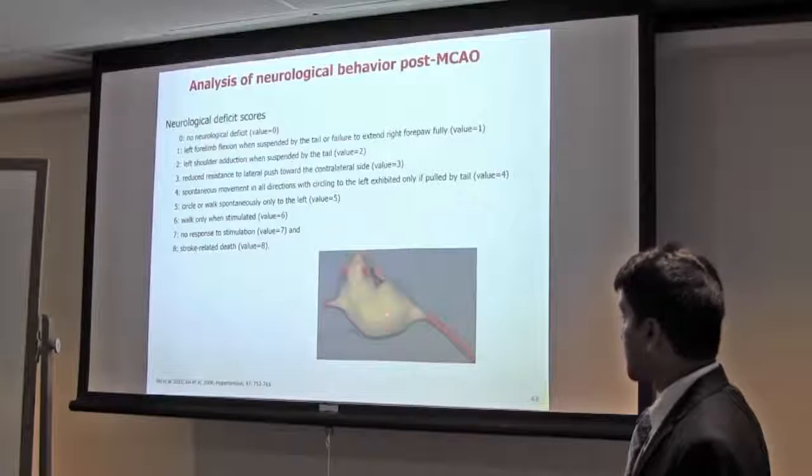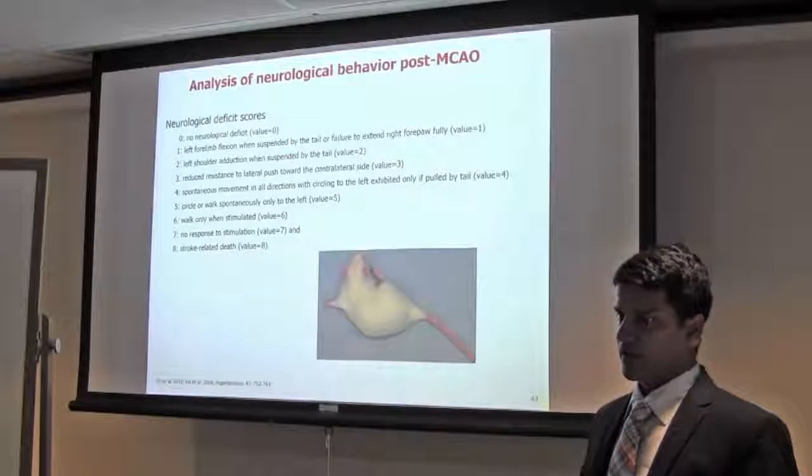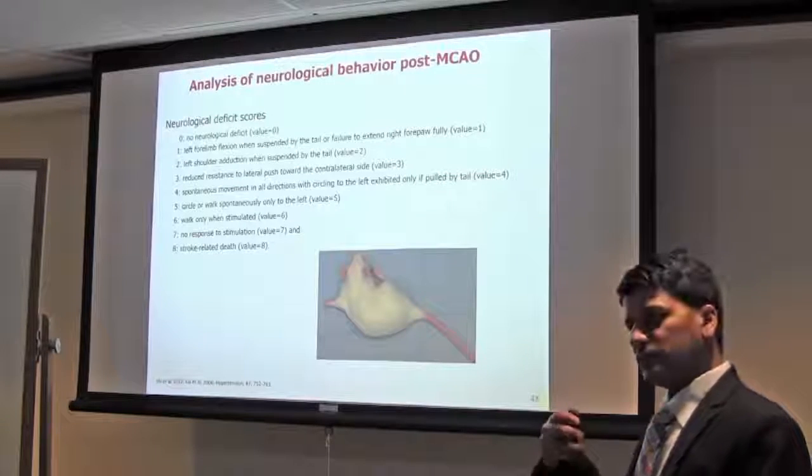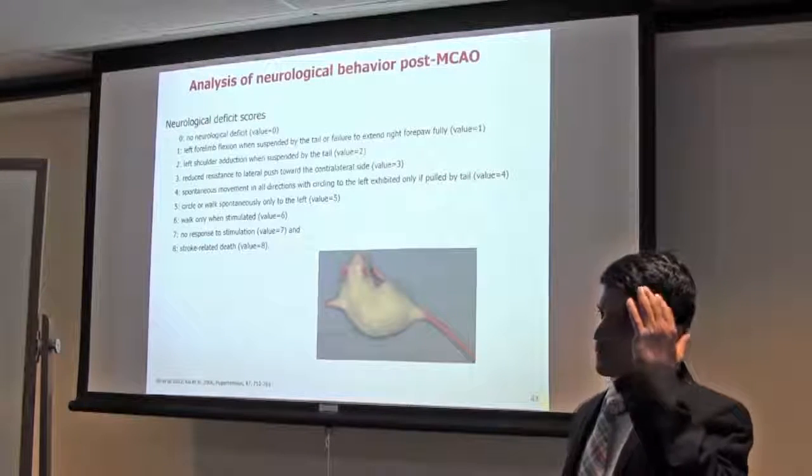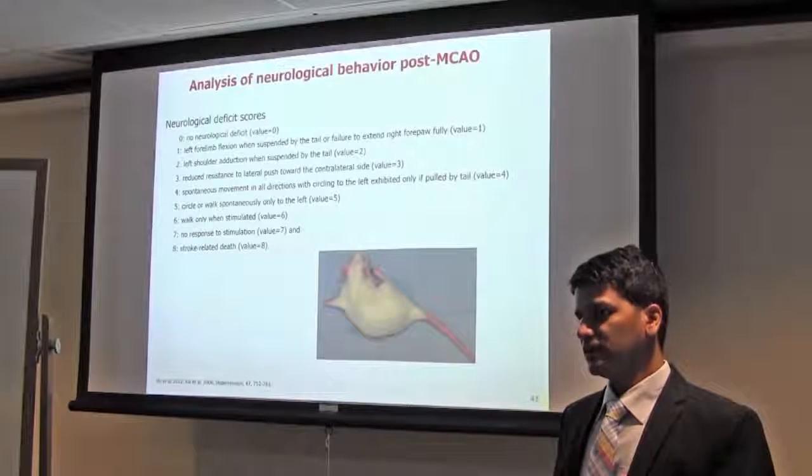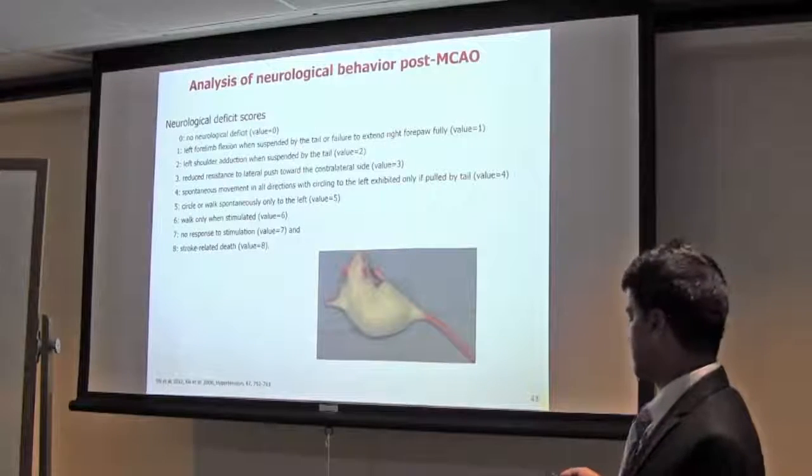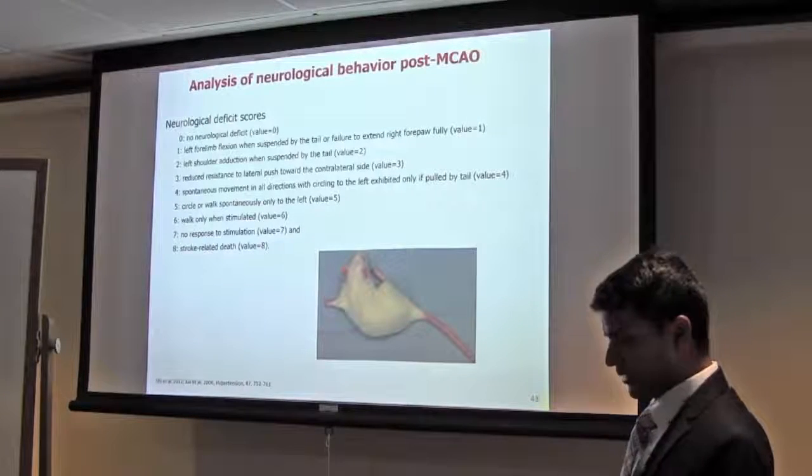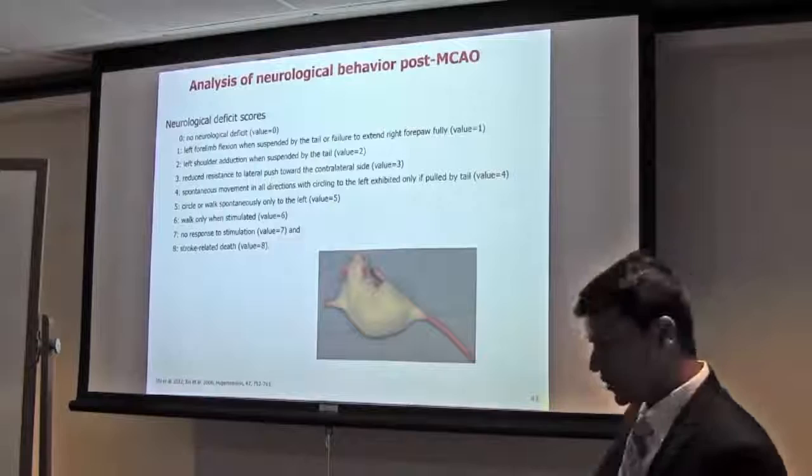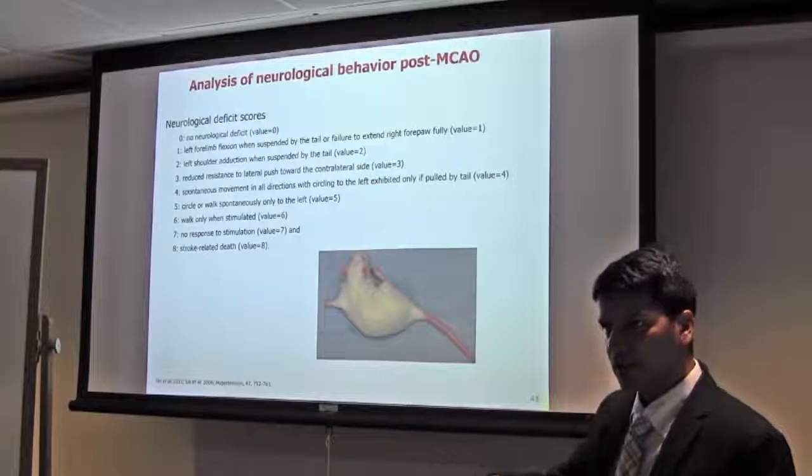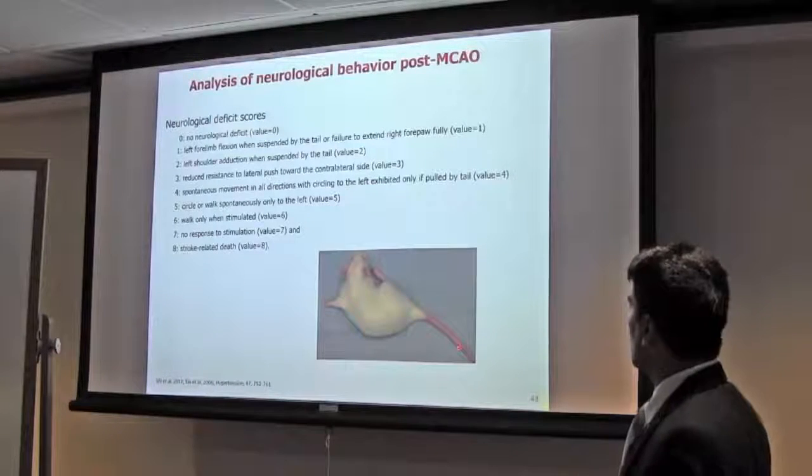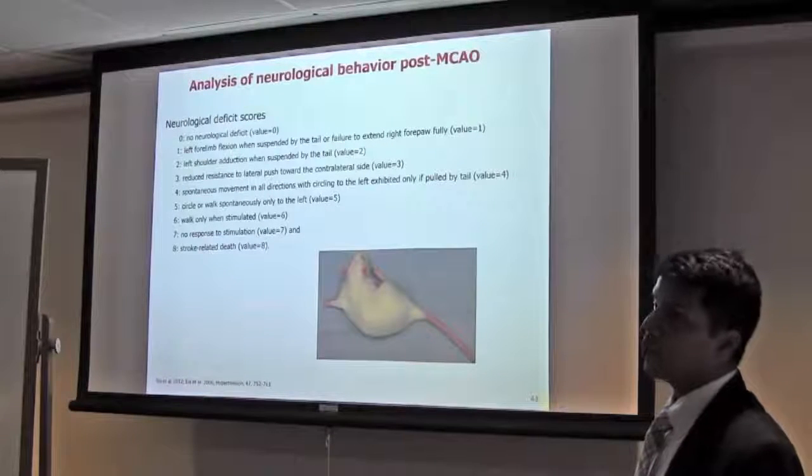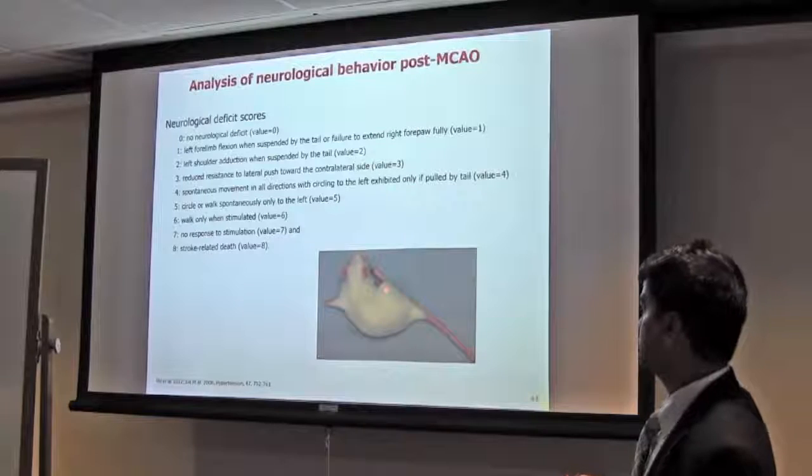You can measure the neurological behavior after ischemia or stroke. If we do left side MCAO, the right side will be paralyzed. You can see different neurological behavior. When you suspend by tail, it will circle, or sometimes it spontaneously circles because it has stroke. There are different types of methods. This is the eight, nine point method. There is some four point, five point method also. You can check those.